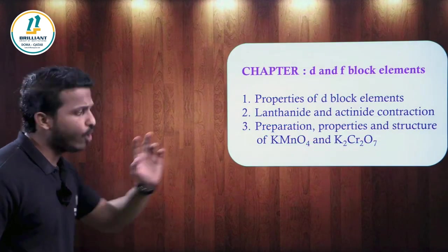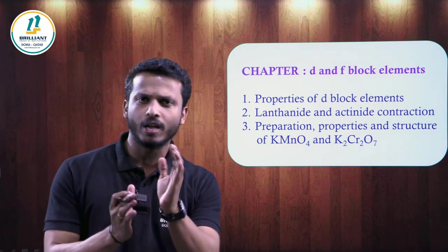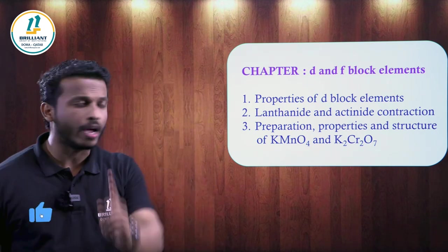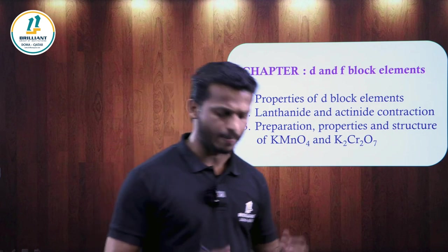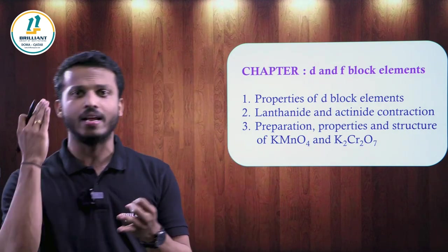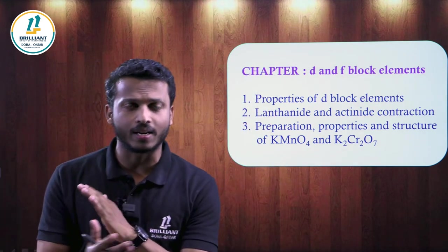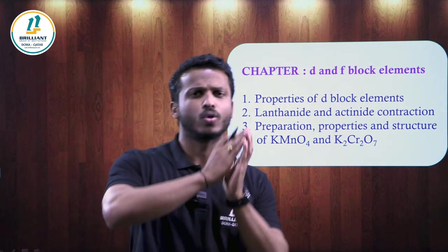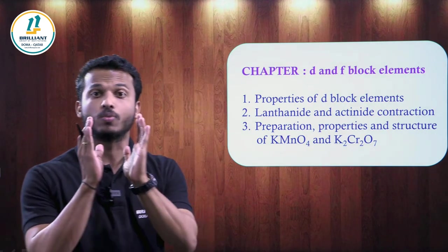Now we go for an inorganic chapter: D and F Block Elements. It is a full theory chapter — only one calculation expected, the magnetic moment calculation. Focus mainly on the properties of D block elements: why they are colored (d-d transition), why they are used as catalysts, why they form complexes, why they show variable oxidation states, why their metallic character and melting points are higher, and what are interstitial compounds. Around 10 to 13 properties are important — reasoning questions can be expected.